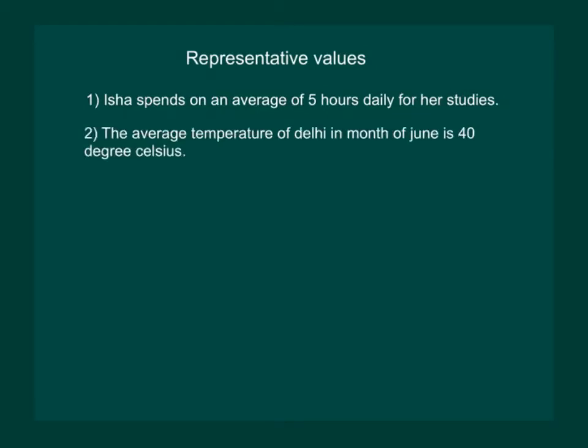Similarly, if the average temperature of Delhi in the month of June is 40 degrees Celsius, that means the temperature at this time of year is very often around 40 degrees Celsius in Delhi. But sometimes it may be less than 40 degrees Celsius and at other times it may be more than 40 degrees Celsius.